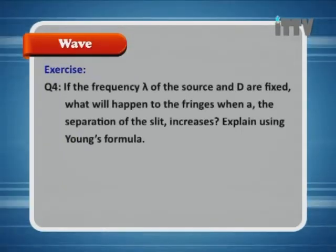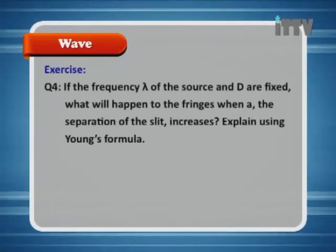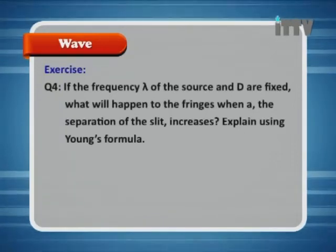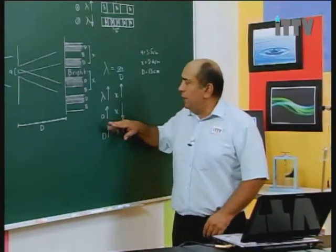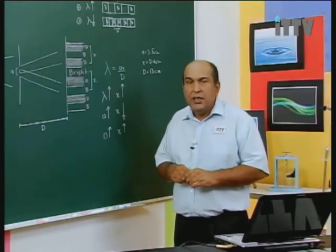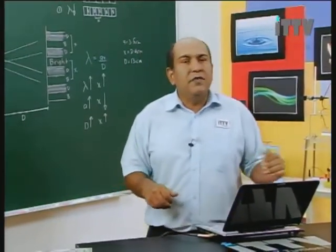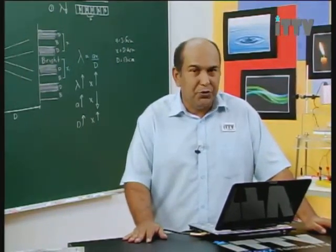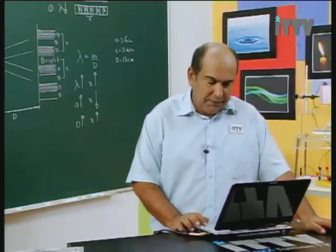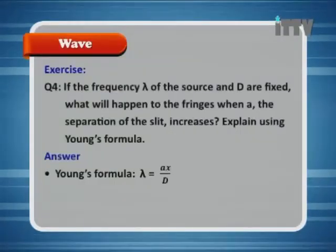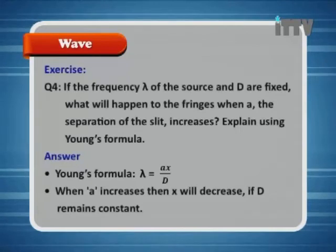If the wavelength lambda of the source and D are fixed, what will happen to the fringes when A, the separation of the slits, increases? Using Young's formula lambda equals AX over D — when A increases, X will decrease if D remains constant.